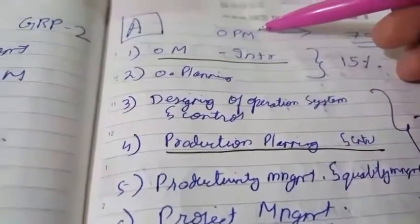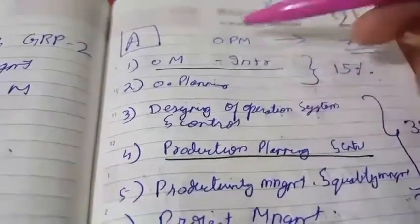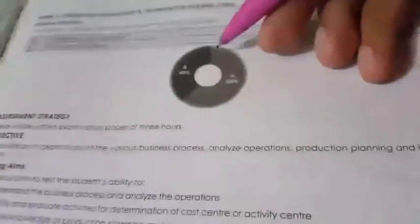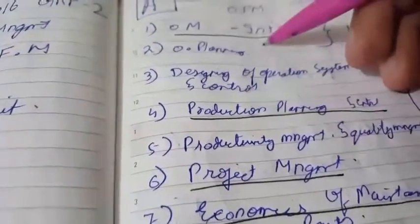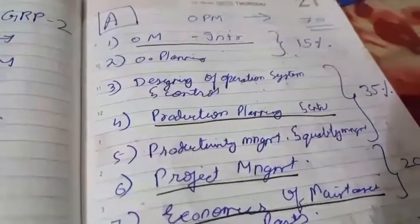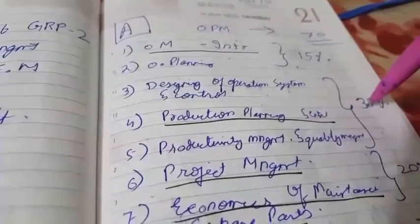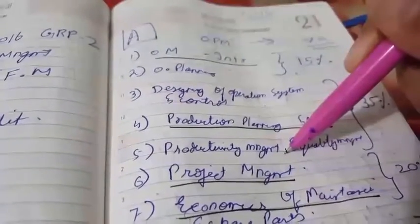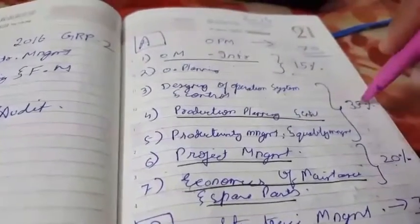The first subject is OPM — Operation Management and Strategic Management — divided into Section A and Section B. In Section A: Operation Management introduction and operation planning consist of 15 marks. Designing of operational systems and controls, production planning and controls, and productivity management and quality management consist of 35 marks. Operation management economics of maintenance and spare parts contains 20 marks.